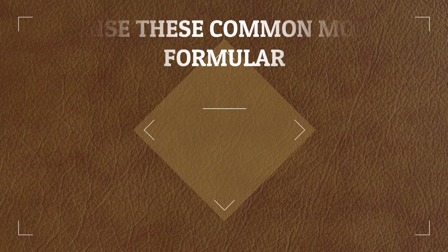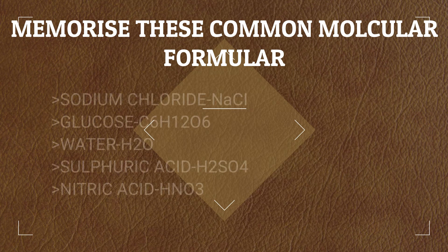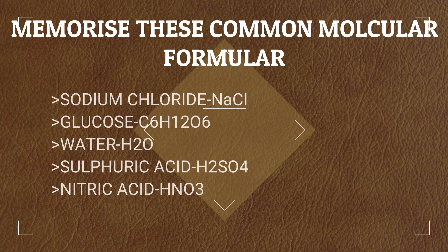Let's discuss our last topic: chemical formulas for compounds. A chemical formula is the indication of the number of atoms in a molecule. For example, water is H2O. Glucose is C6H12O6. You can count and see the number of carbon atoms is 6, hydrogen atoms are 12, and oxygen atoms is 6.